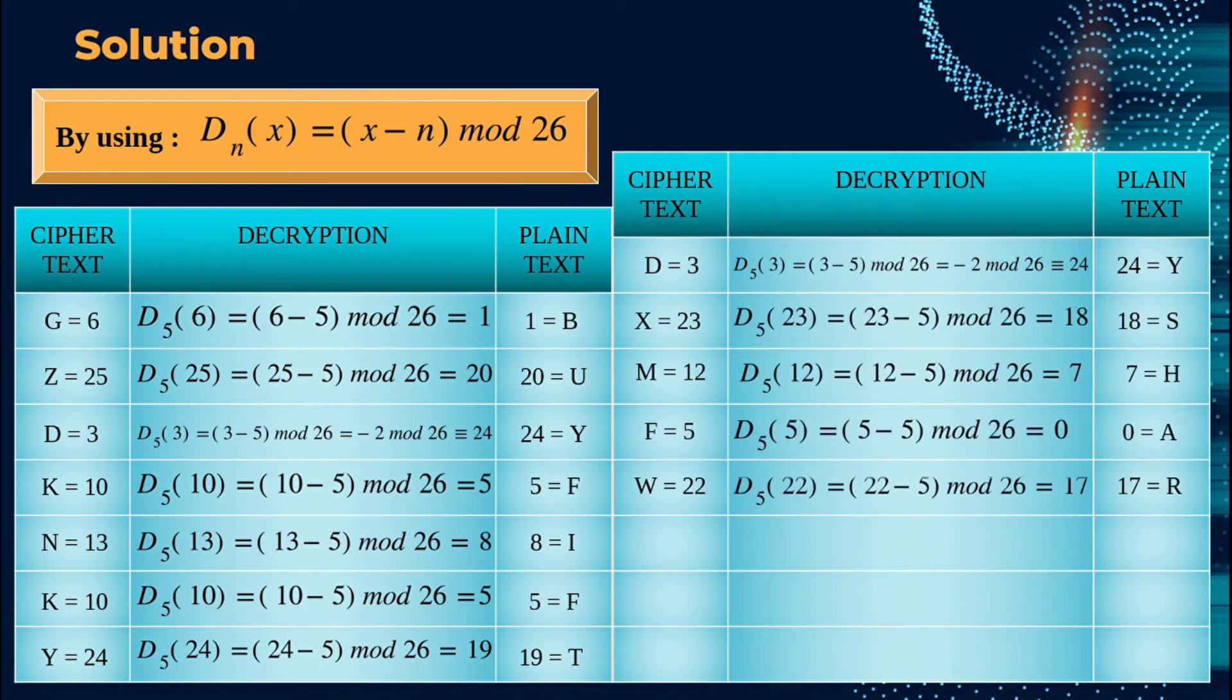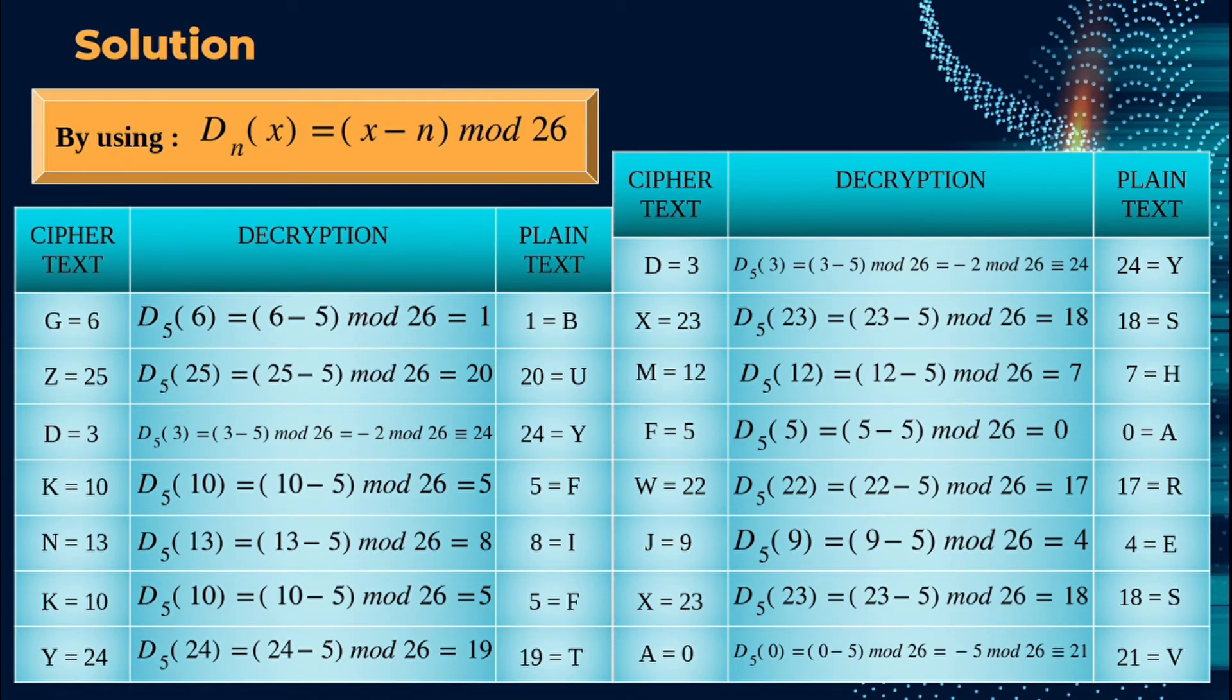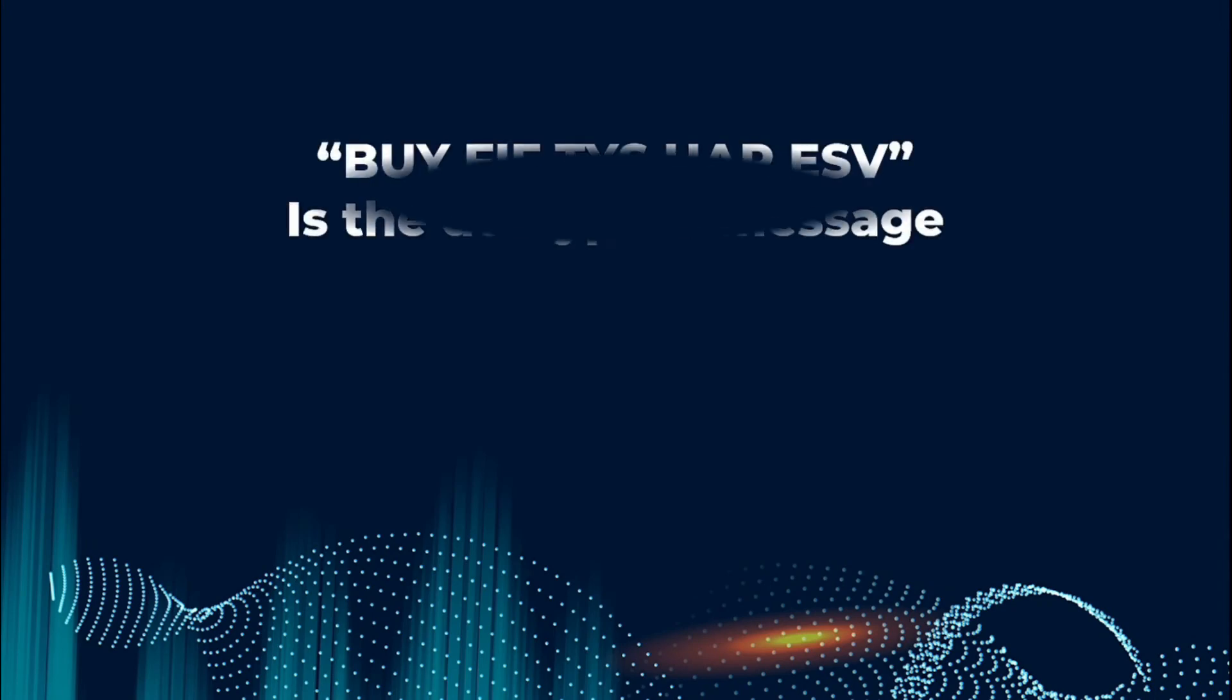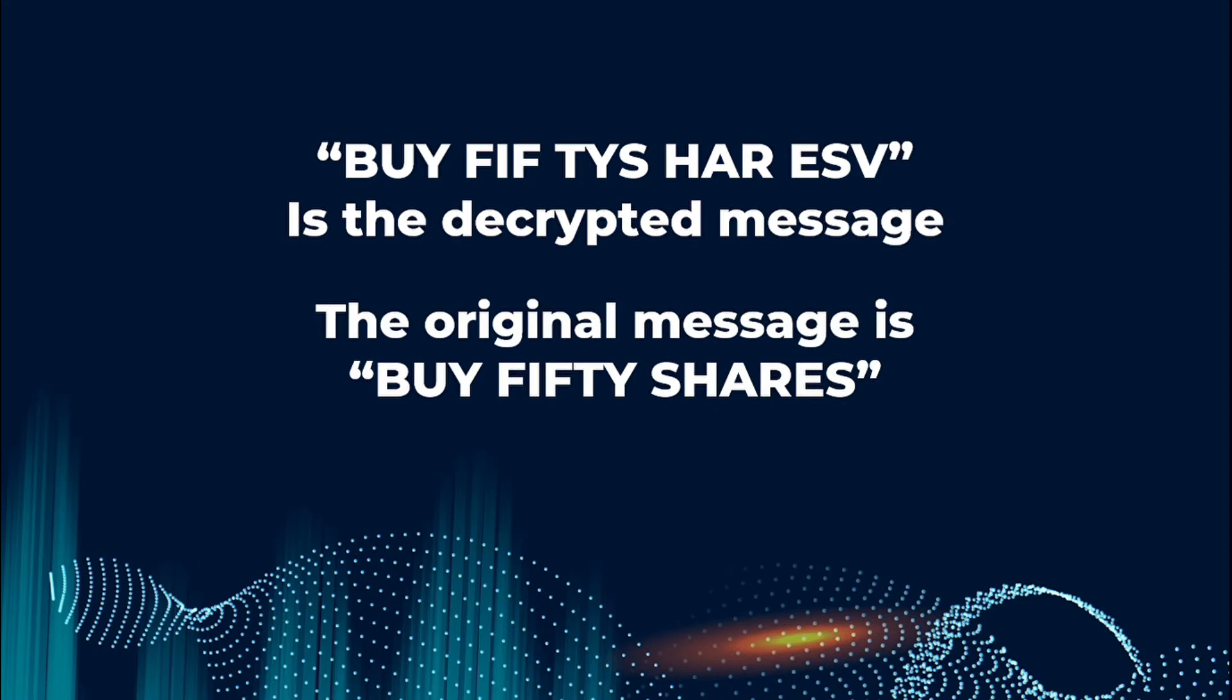The process continues until all ciphertext are decrypted to plaintext. The congruence theory is involved throughout the process, especially for ciphertext D in this example. Thus, the decrypted message is B U Y F I F T Y S H A R E S, which can be rearranged, and the original message is buy 50 shares. There appears an extra character V in the decrypted message, as the encrypted message earlier have to be in a group of 3.